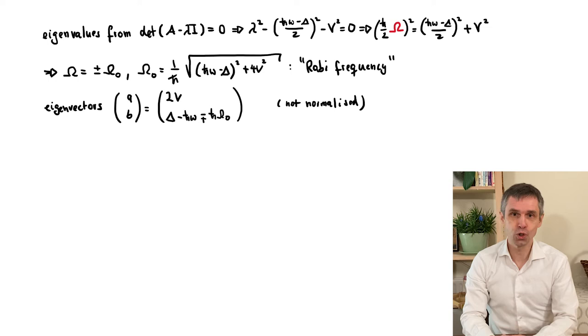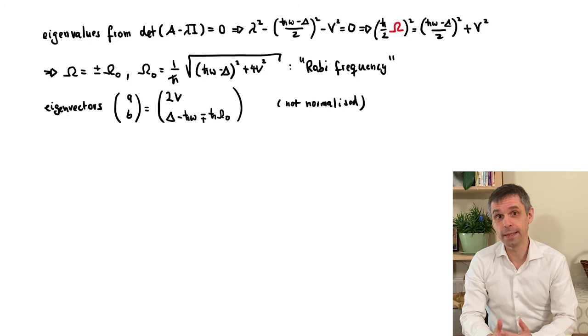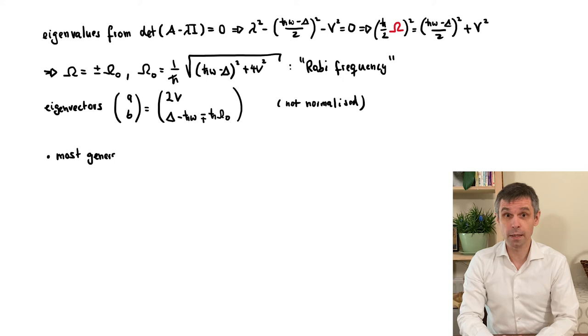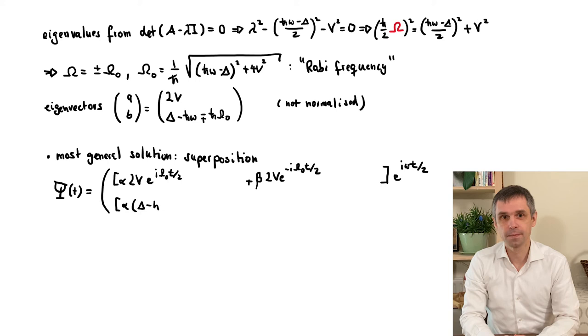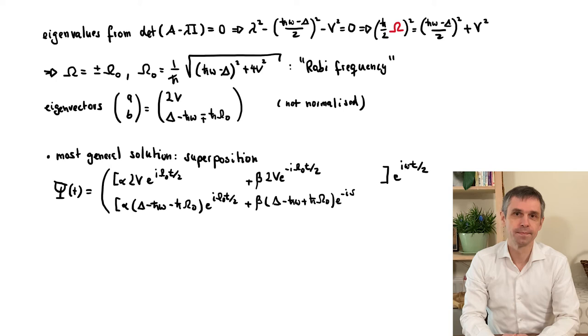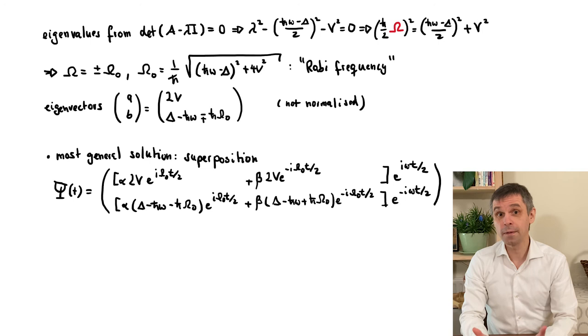This completes the part of finding the two special solutions. They are just a trial solution, where we insert these specific sets of values for A, B, and capital Omega. Now, the superposition principle still applies to the Schrödinger equation that we solved above, even with the driving, since it is still linear in the state capital psi of the system. And according to this, the most general solution is just the sum of the two special solutions. So this can then be written as given here, where alpha and beta are constants that depend on the initial conditions.